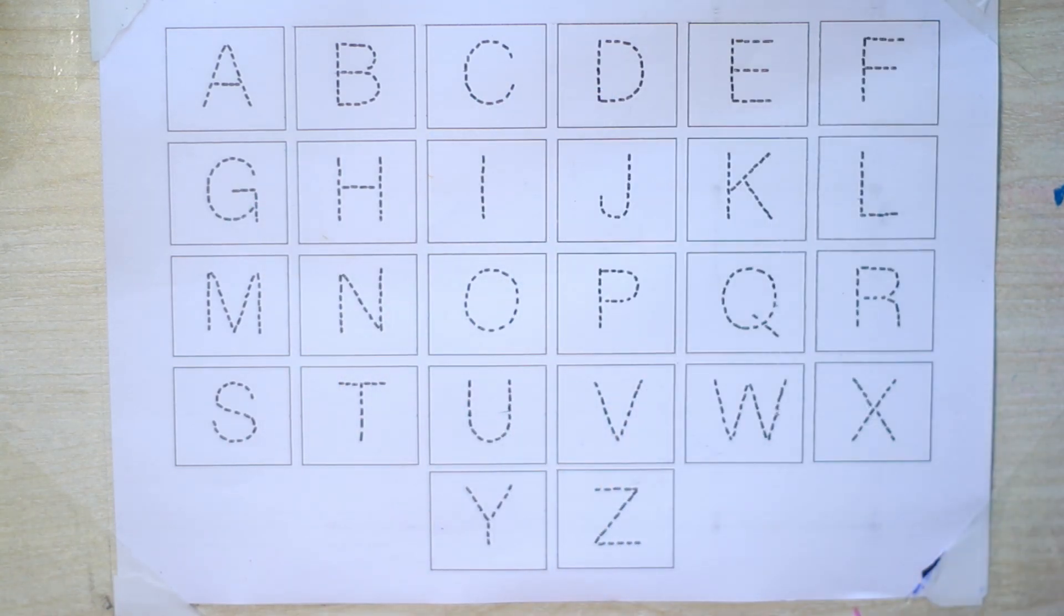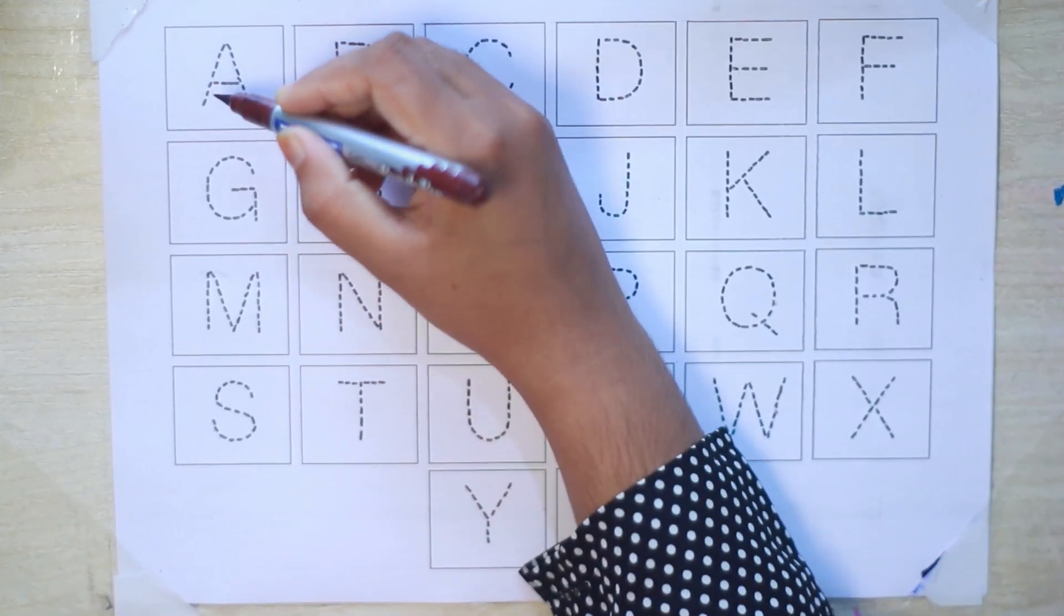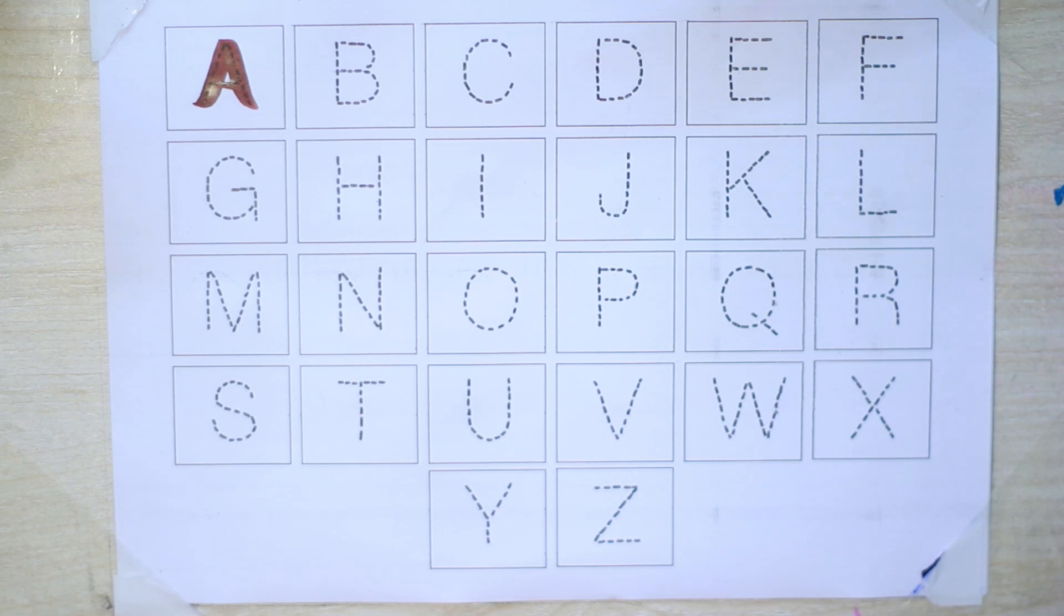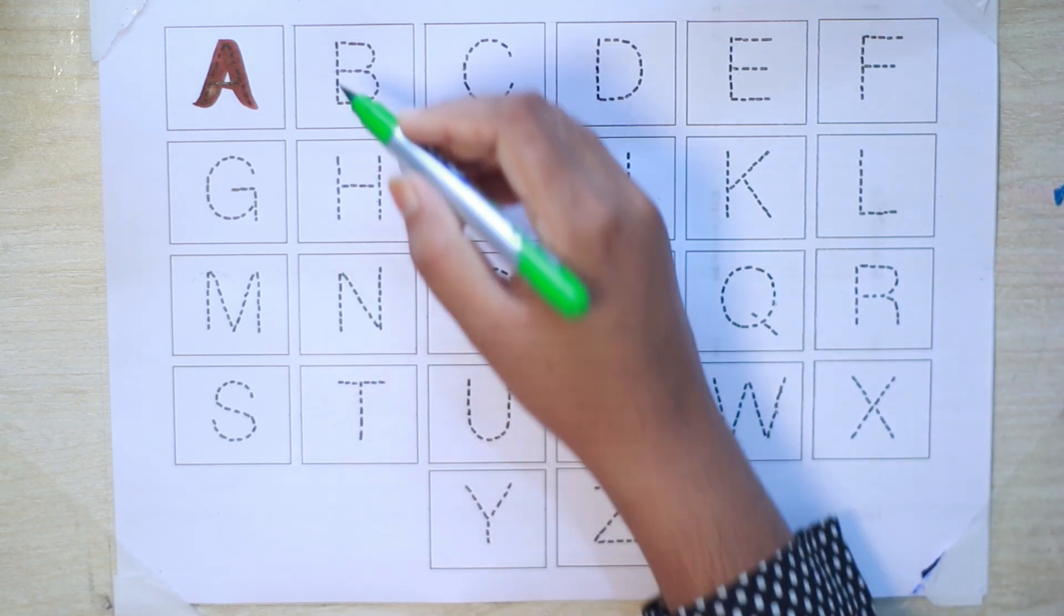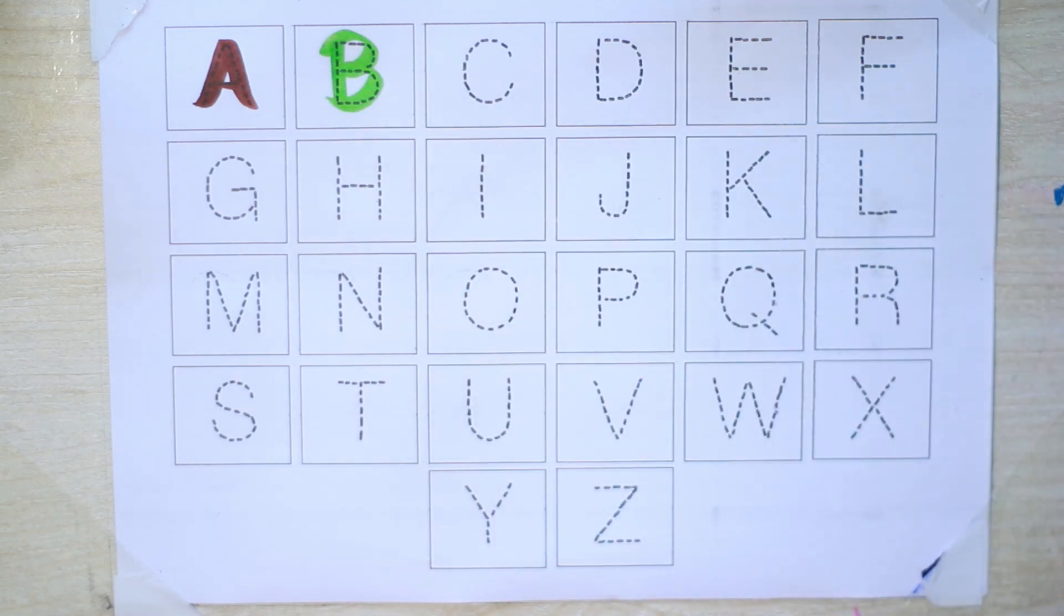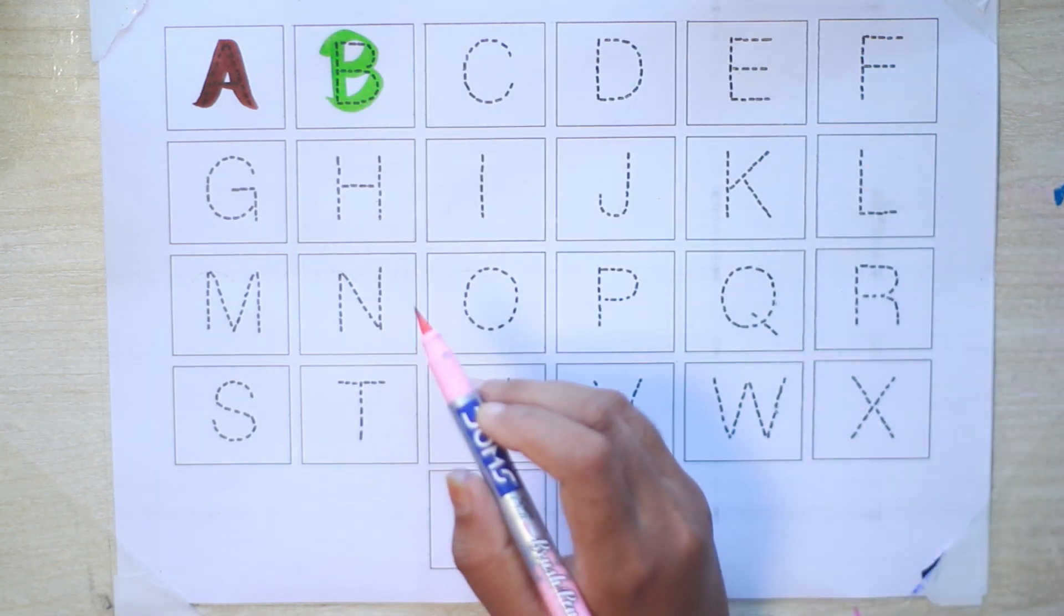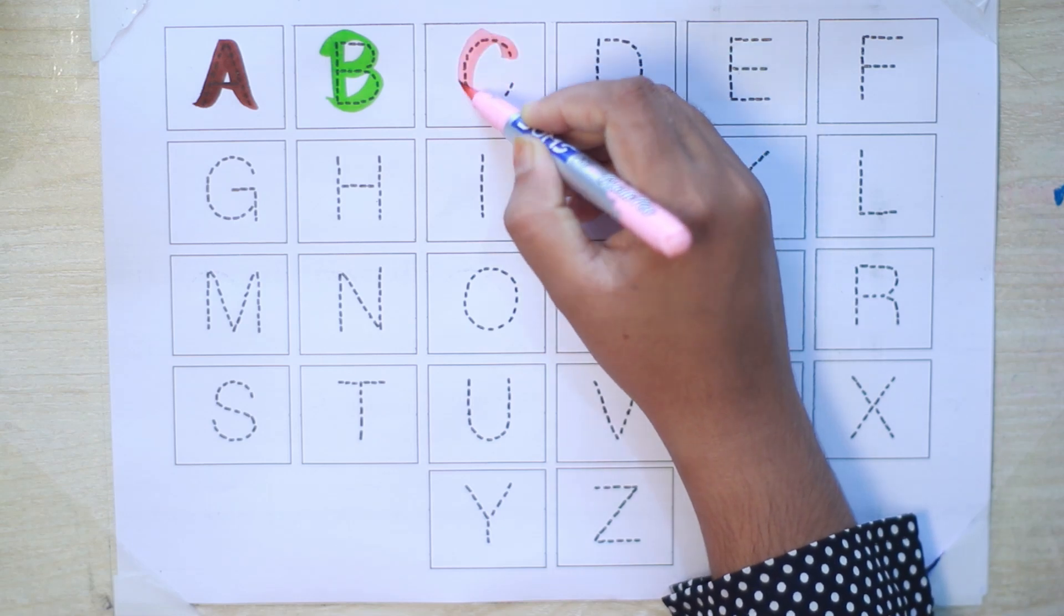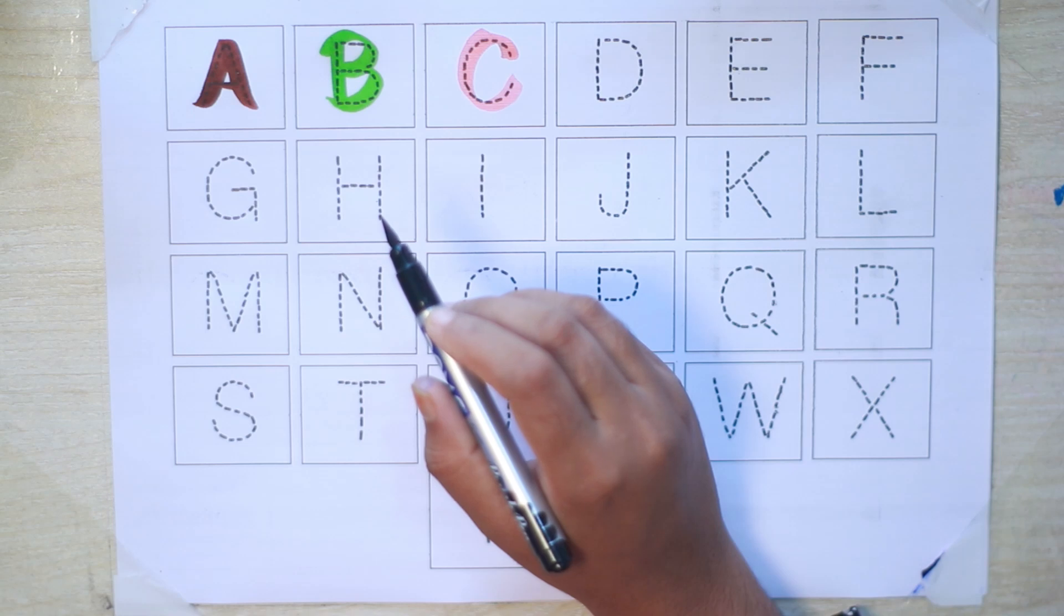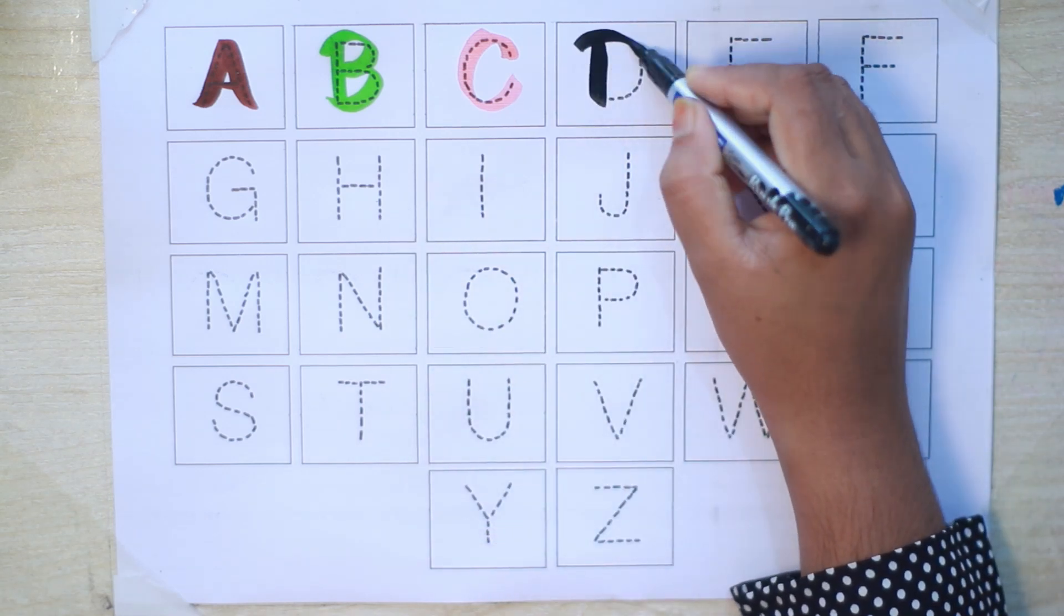Brown color, A, A for ant. Light green color, B, B for black penny. Mint color, C, C for cat. Black color, D, D for dog.